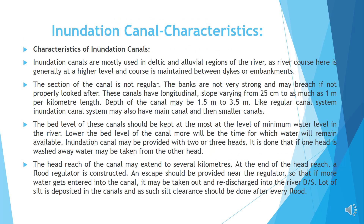Characteristics of inundation canals. Inundation canals are mostly used in deltaic and alluvial regions of the river, as the river course here is generally at a higher level and is maintained between dikes or embankments. The section of the canal is not regular; the banks are not very strong and may breach if not properly looked after. These canals have a longitudinal slope varying from 25 cm to as much as 1 m per kilometer length. The bed level of these canals should be kept at most at the level of minimum water level in the river. The lower the bed level of the canal, the more will be the time for which water will remain available. The head reach of the canal may extend to several kilometers. At the end of the head reach, a flood regulator is constructed. An escape should be provided near the regulator so that if more water enters into the canal, it may be taken out and re-discharged into the river downstream.